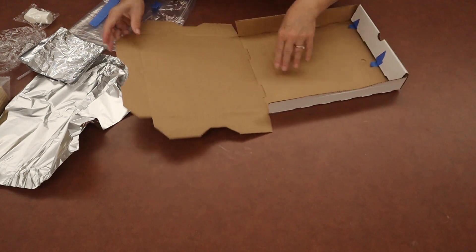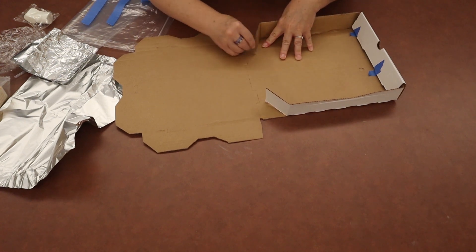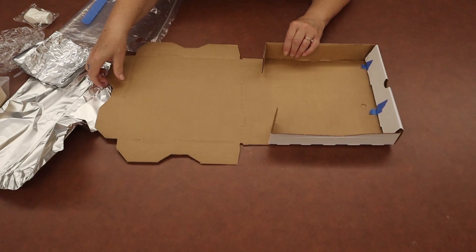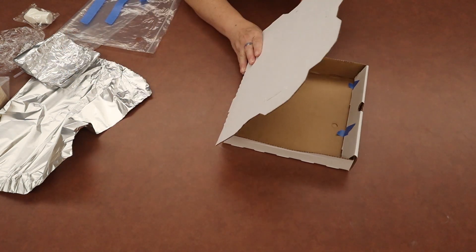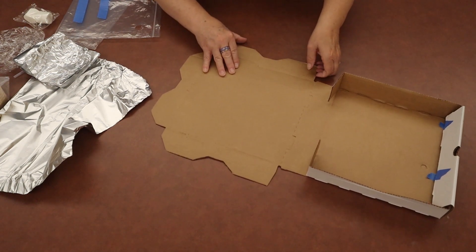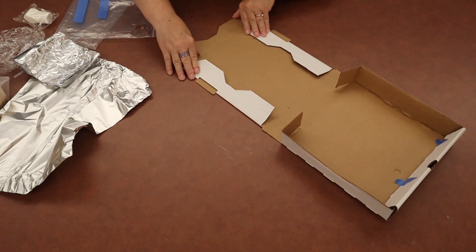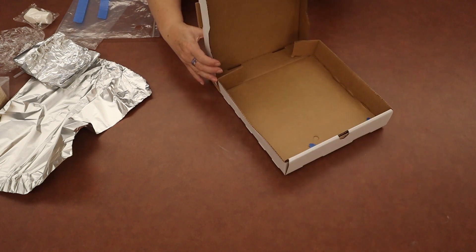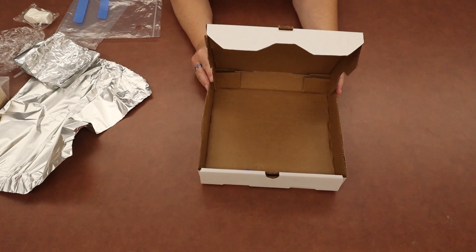Then take your other end and you're going to have tabs on this side as well. You just take those and fold them to the inside of your pizza box. Fold this piece up, fold this over, take these ends, fold them in, fold that up. And there we have the base for our solar oven.